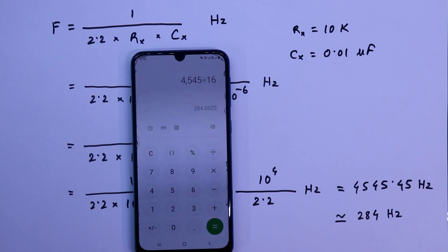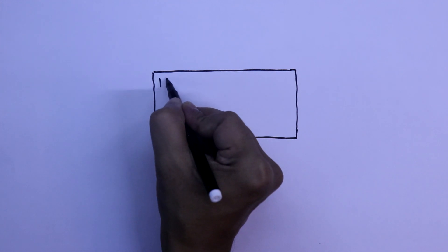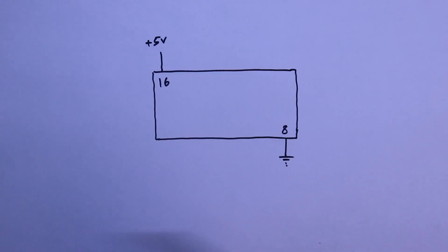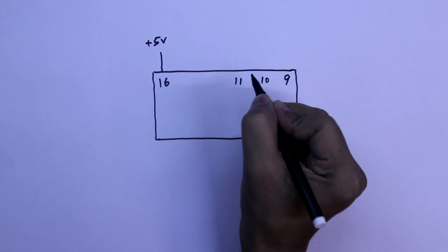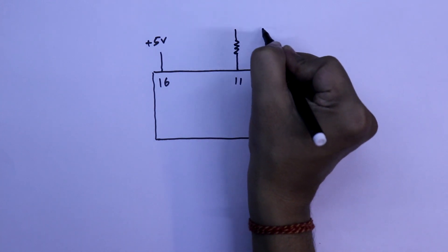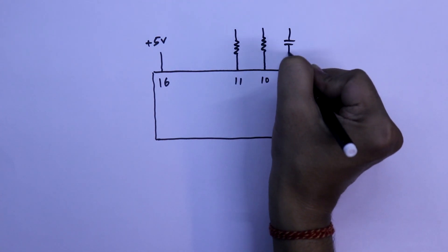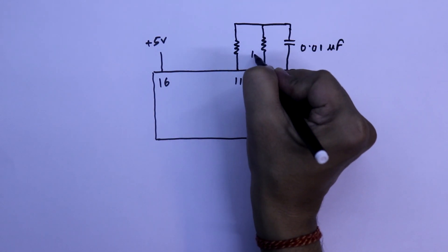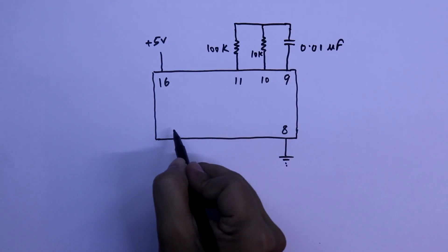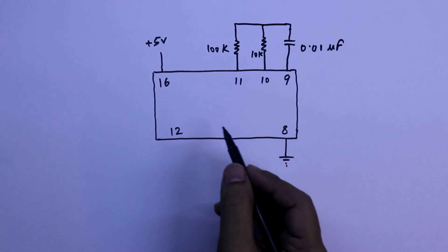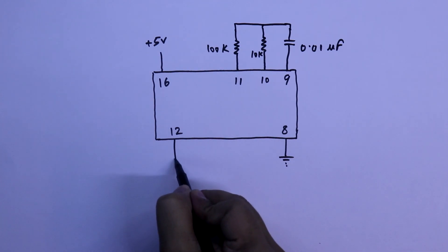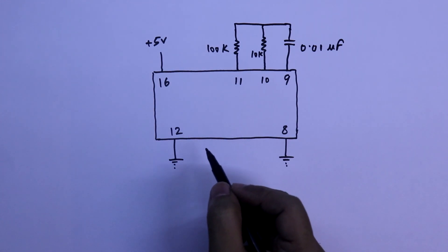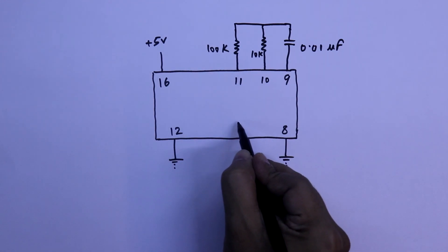Now we will see the practical. Here is the IC. Pin 16 is connected to the positive 5V rail, pin 8 to the ground. Here are pins 9, 10, and 11 — RS is 100K, RX is 10K, and CX is 0.01 microfarad. Pin number 12 is the reset pin. Since we don't want to reset the IC, we keep this pin low by connecting it to ground. We are going to check the frequency at pin number 7.